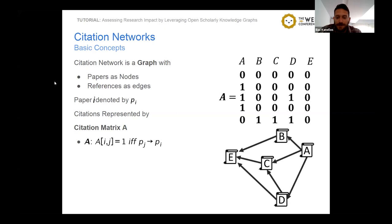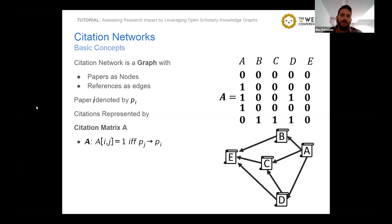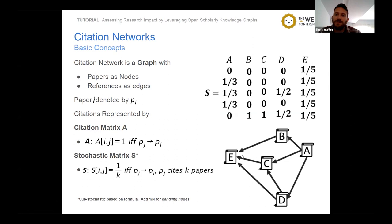Another useful representation is the stochastic matrix S, derived from the citation matrix by dividing each non-zero value by the sum of 1s in the column. For paper A, which cites 3 papers B, C, and D, instead of a 1 we have the value one-third. Additionally, for papers such as E that do not cite any others, we artificially insert edges towards all papers and towards itself, so the last column has a value of 1 divided by 5, where 5 is the number of nodes.